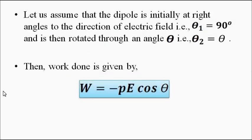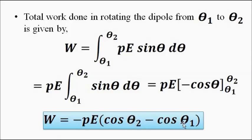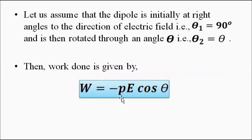Now let us assume that initially the dipole is at right angles to the electric field, so θ₁ = 90°. The dipole is then rotated from this initial position to a final angle theta against the clockwise torque. Substituting θ₁ = 90° and θ₂ = theta into the work expression, and noting that cos 90° = 0, the work done simplifies to W = −pE cos theta.